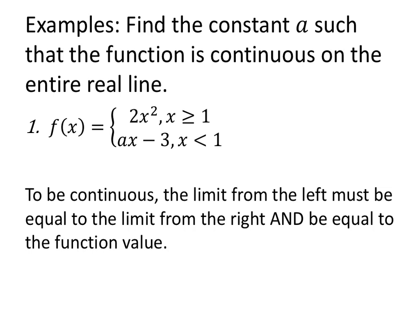Piecewise defined functions are a great way of looking at continuity. We want to make sure these pieces match up. So we're going to find the constant a such that the function is continuous on the entire real line. We know that to be continuous, the limit from the left must be equal to the limit from the right and be equal to the function value. Now I know 2x squared is continuous on its domain, and ax minus 3 is continuous on its domain. The only possible problem spot will be here at 1.